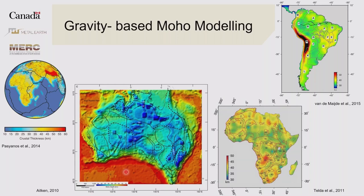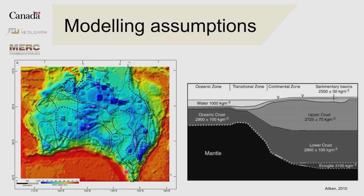Some of the differences between the modeling we do and what has been done — for example this Australian model — are in the assumptions put into it. Richard Smith mentioned that gravity modeling can be pretty non-unique, so there can be a number of different models that explain the same data set, and steps need to be taken to limit this non-uniqueness. In areas with pretty large models, a classic constraint is to assume homogeneity through blocks of the crust — constant density upper crust, constant density lower crust, constant density mantle — and then it's the thickness of the layers that are solved for, making it computationally feasible.